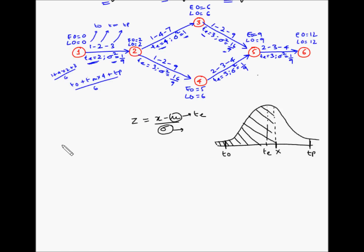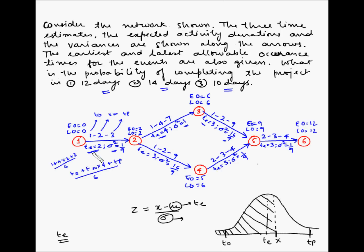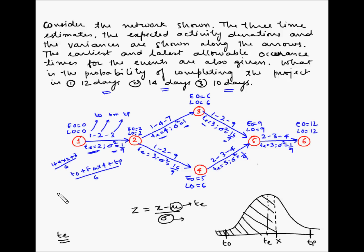Let us start by finding mu, the expected duration of the project. The expected duration of the entire project will be the sum of the expected durations of the activities on the critical path, because the critical path is the longest duration on the project — it cannot be delayed and represents the entire project duration. So first we have to identify the critical path and the critical activities for this project. There are various methods to do this.